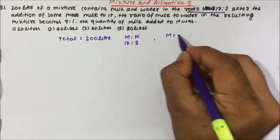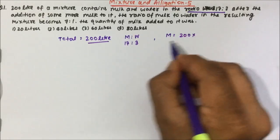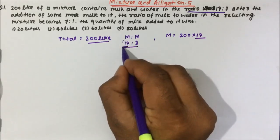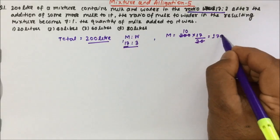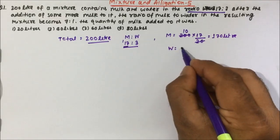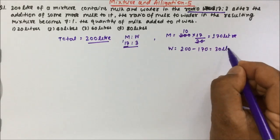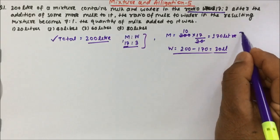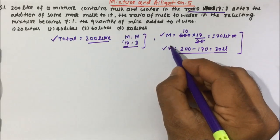So if I talk about milk, how much milk will be there? The total is 200, and the ratio in front of milk is 17, divided by the total value 17 plus 3, which is 20. So 200 divided by 20 times 17 gives us 170 liters of milk. In the same way, water is 200 minus 170, that means 30 liters will be water. So we have calculated the quantity of milk as 170 liters and water as 30 liters.